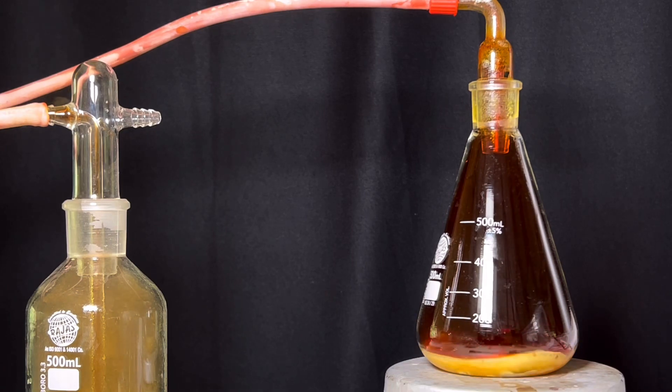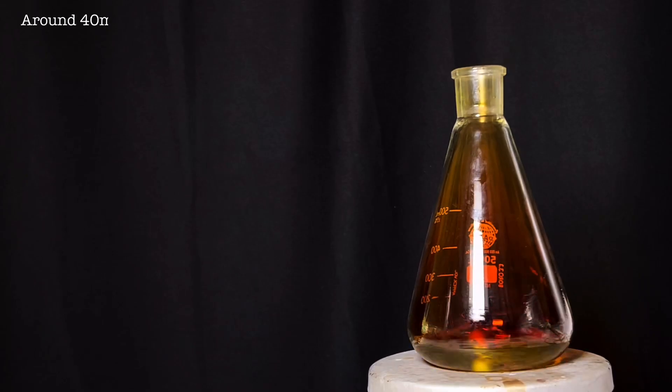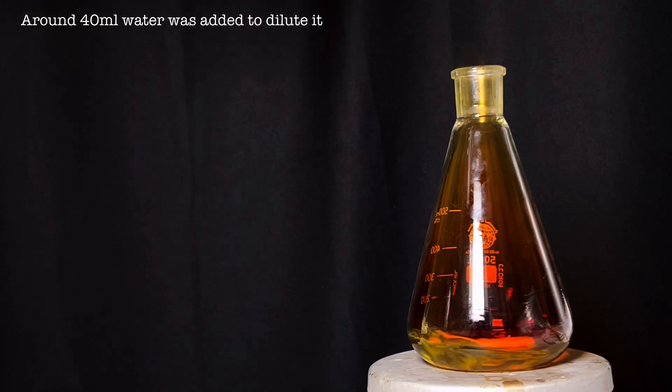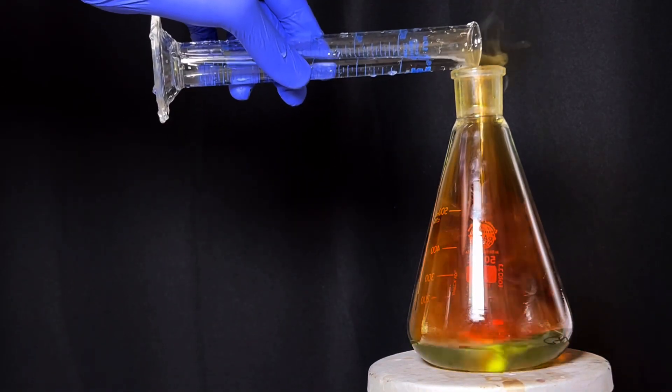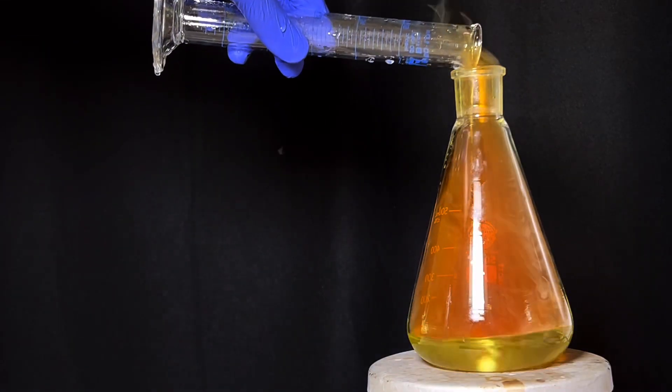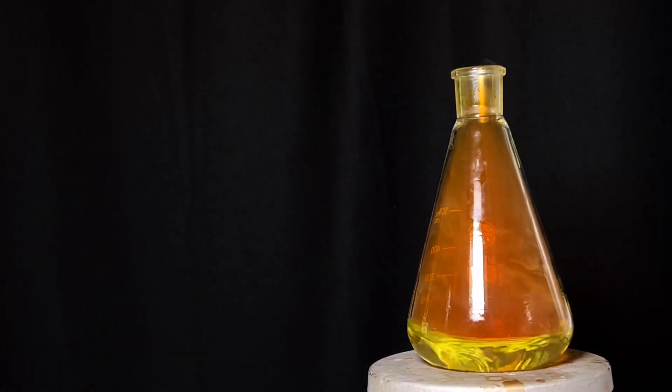Finally when the reaction dies down, the gas trap system was removed and around 40 milliliters of water was added to dilute it. Do not add too much water as this could make the bismuth oxy nitrate and this forms a white precipitate.